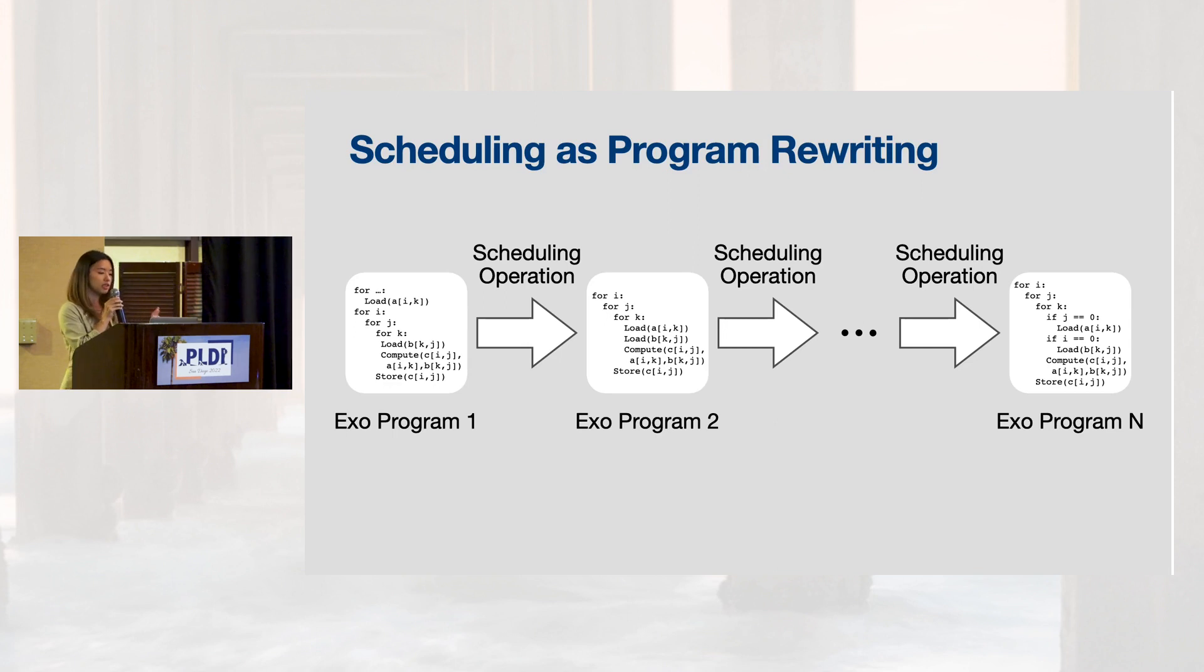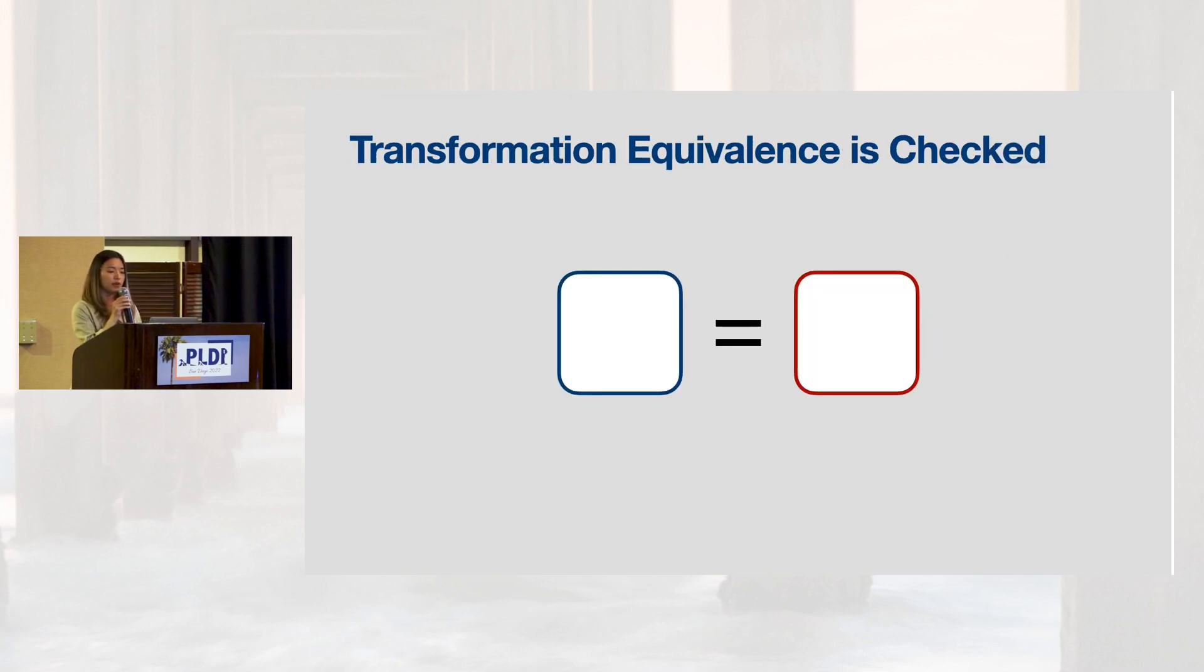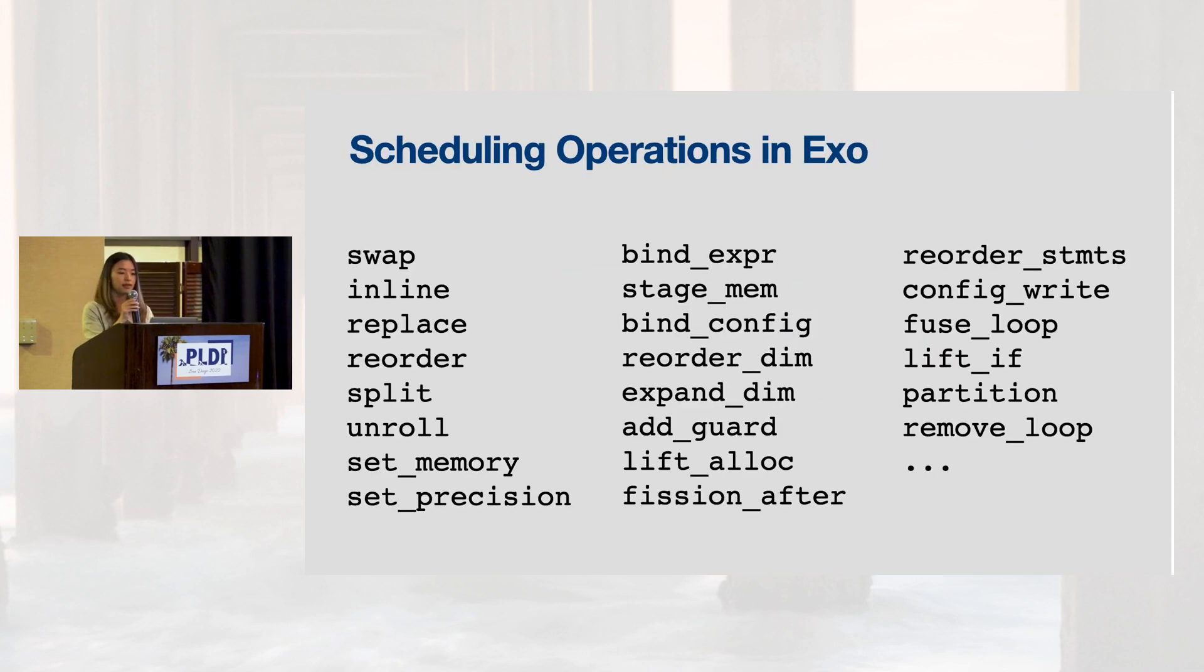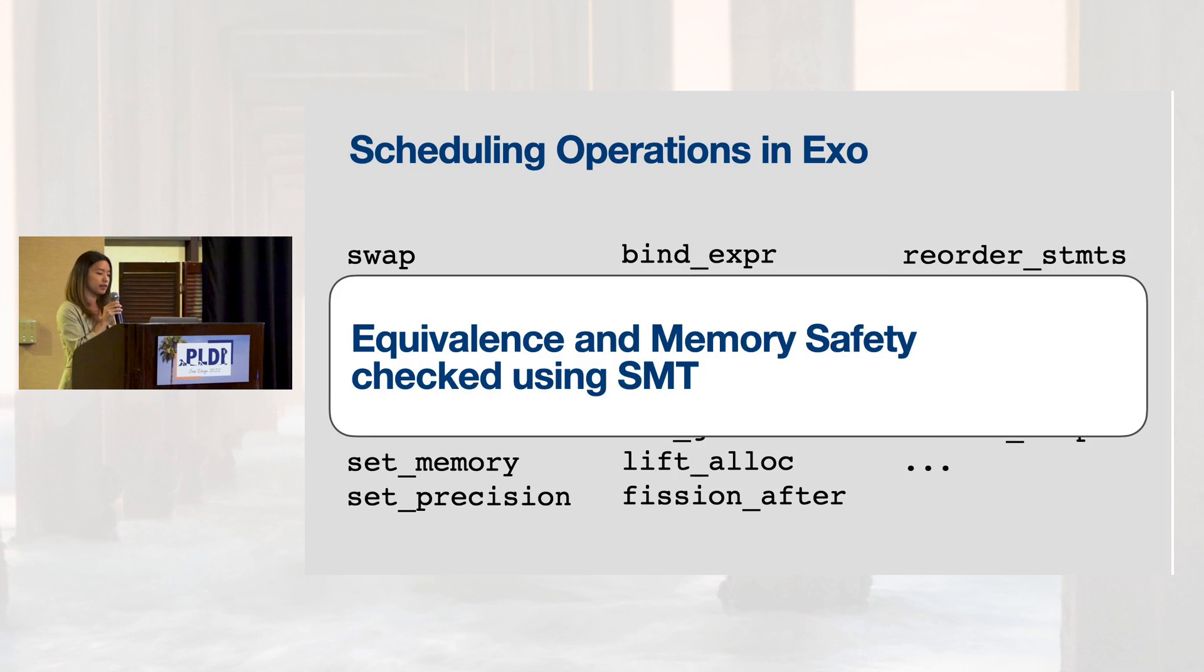As a result, large schedules are built from the sequential composition of atomic program transformations, which maps from a valid EXO program to another valid EXO program. Whenever we do such rewriting, we have to establish the equivalence of the procedures involved. The EXO compiler has a large set of such atomic scheduling primitives and checks their correctness using an SMT-based program analysis, which we will describe a bit later in this talk.